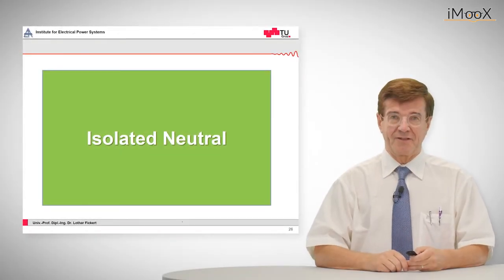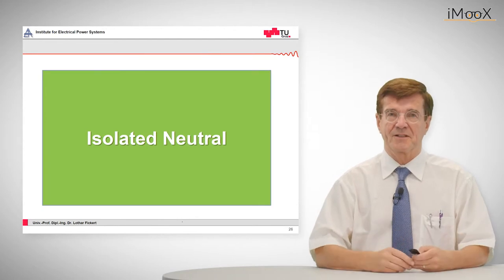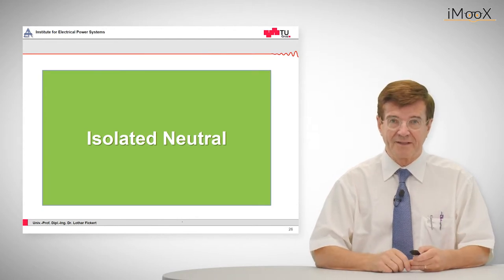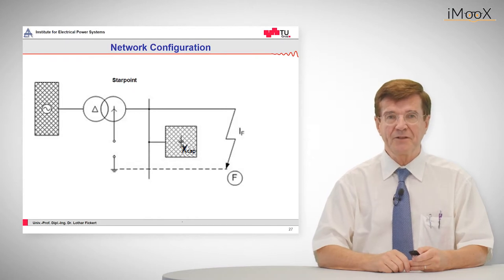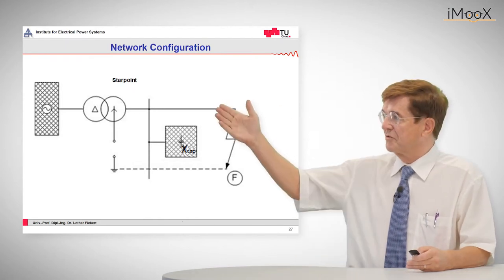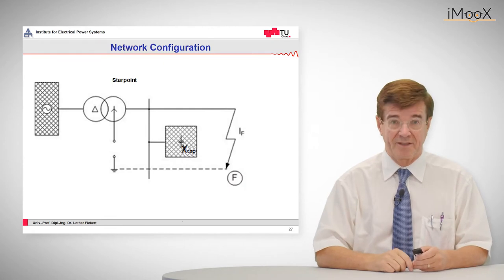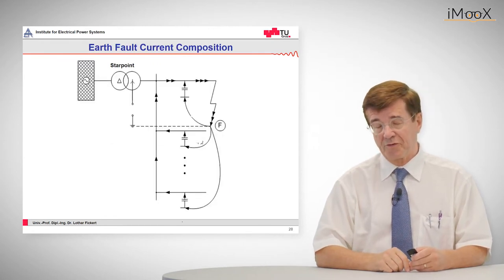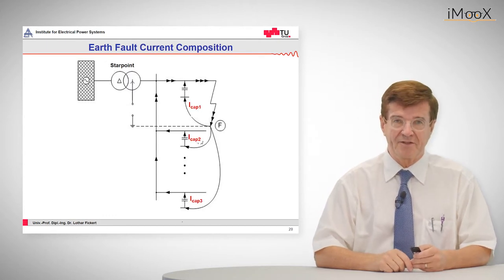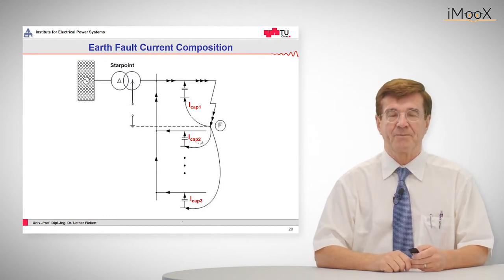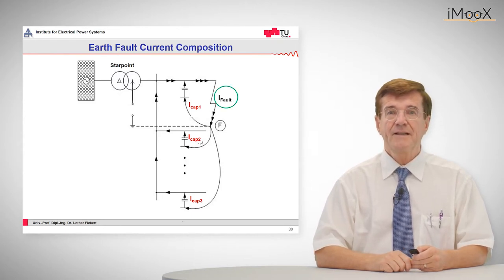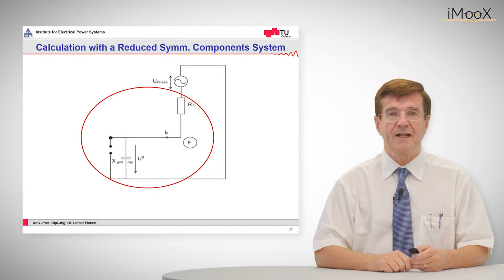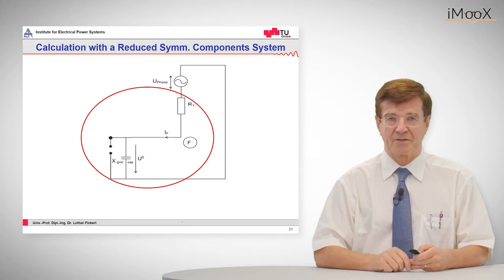Now let's start with the insulated neutral, which is the first step to understand the resonant grounded grid. Again we have the network configuration where in the neutral of the transformer there is just nothing — which means it is an isolated neutral. The currents from the fault point go back into the otherwise perfectly insulated system, which are the capacitive currents of the healthy feeders and of the faulty feeders. These add up to the fault current, and this is the representation in the so-called reduced symmetrical components representation.